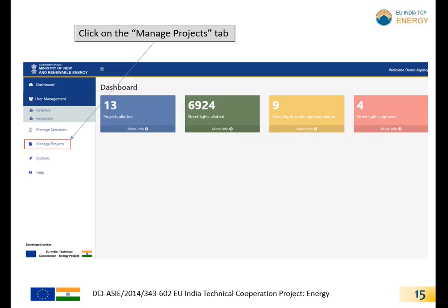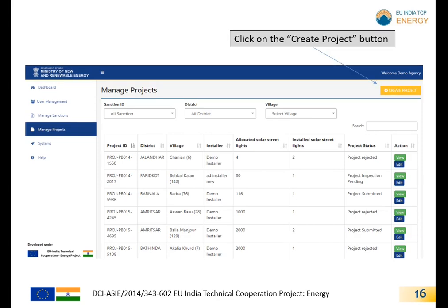Firstly, the SNA needs to click the button 'Manage Projects' on the side menu. For allocating a new project, the SNA needs to click the button 'Create Project' on the top right corner.